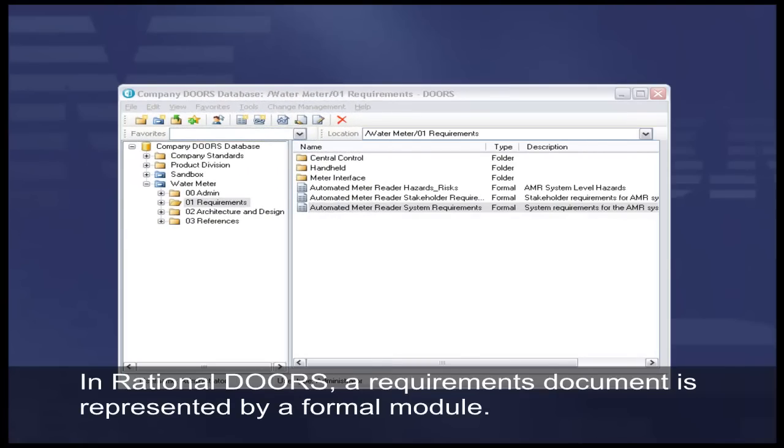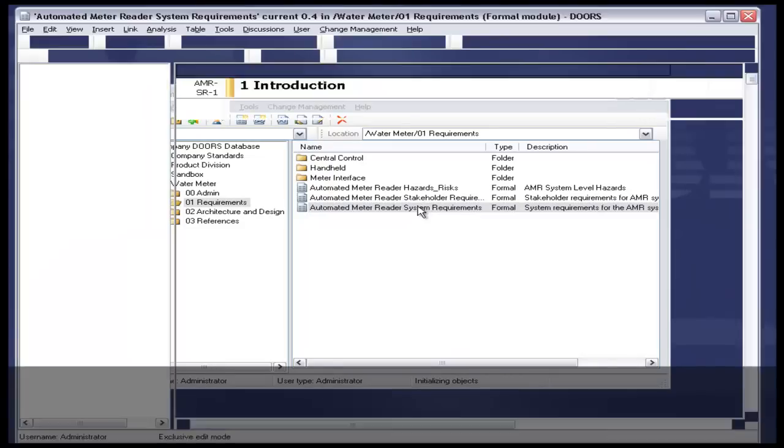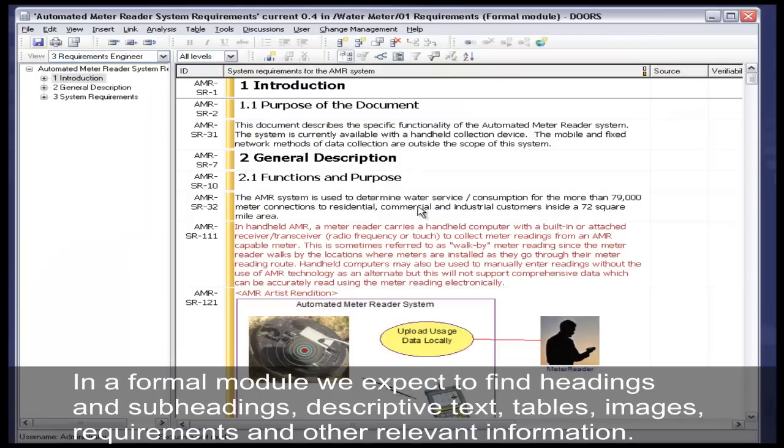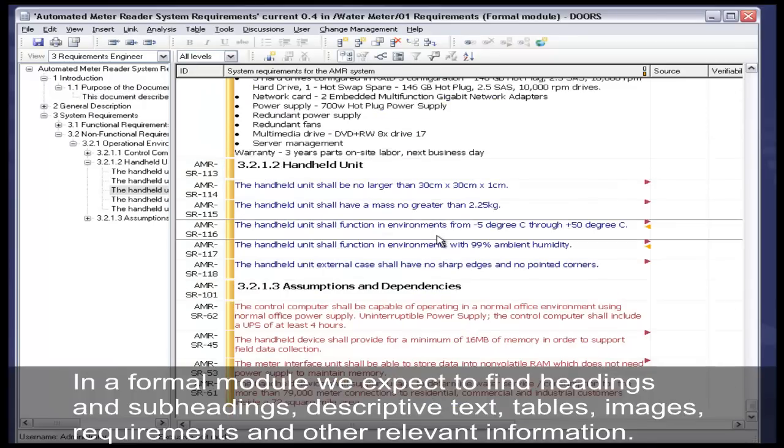In Rational DOORS, a Requirements document is represented in a Formal Module. In a Formal Module, we expect to find headings, subheadings, descriptive text, tables, images, requirements, and other relevant information.